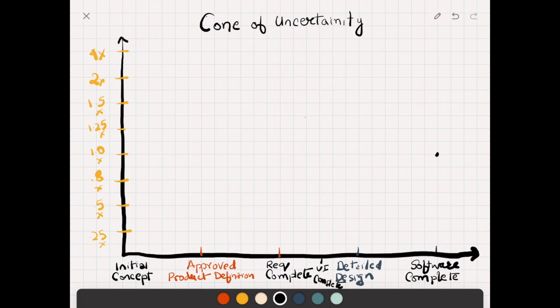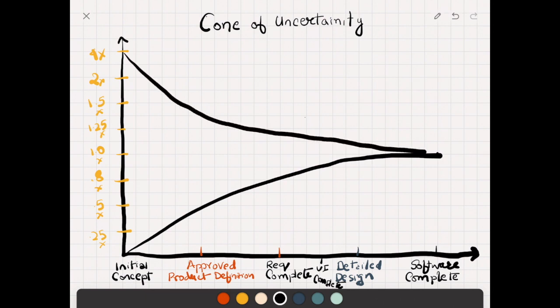So this is how it goes initially. We can see when the initial concept was there, the margin is quite high, and as we are going into the different phases of software development, the horizontal axis is the error margin and the vertical is the different phases of the software development cycle.